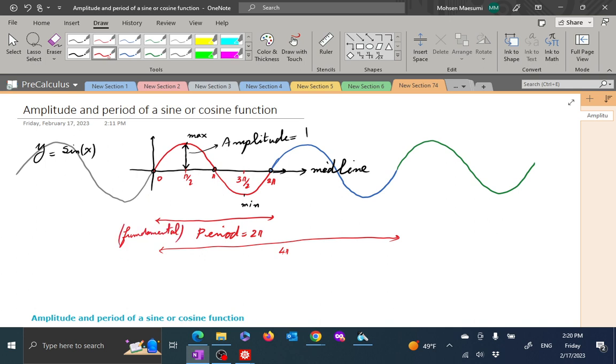To emphasize that is the shortest time you need to wait before the function repeats itself. Well, what if I have y equals, say, 3 sine of x? That's going to make the picture that much taller, so the amplitude now is 3. If I had y equals minus 3 sine of x, the function will flip upside down, but the amplitude still is 3.